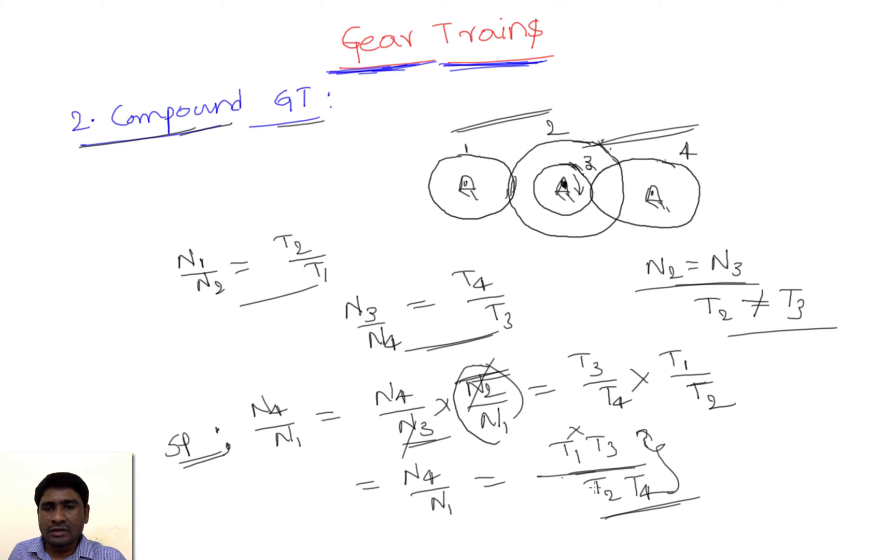So the speed ratio, which is also sometimes called train value - speed ratio equals 1 divided by train value.